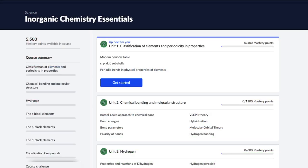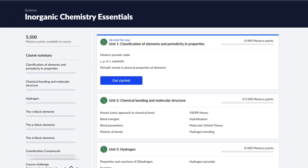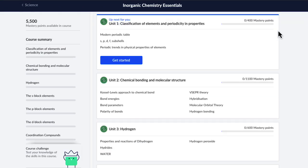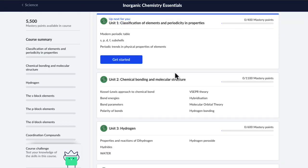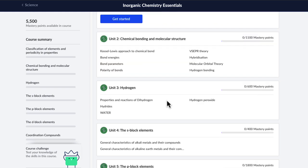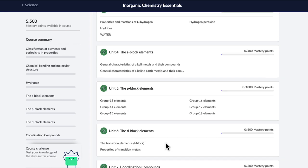This course covers all the essential topics of class 11th and 12th CBSE inorganic chemistry. It starts with some basic ideas of your periodic table and chemical bonding, and then directly jumps into the elements: the hydrogen and S-block elements, the P-block, and then finally the D-block and coordination compounds.